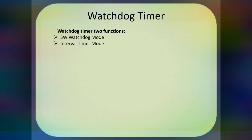Under watchdog mode operation, it provides some time to perform a particular task. If the function is not completed within that time, the watchdog timer waits until the time completes and then gives an indication to the user via a buzzer, LED, or any other indicator. In interval timer mode, it operates just like a normal counter, providing time by interval, and after the particular interval period it generates interrupts.